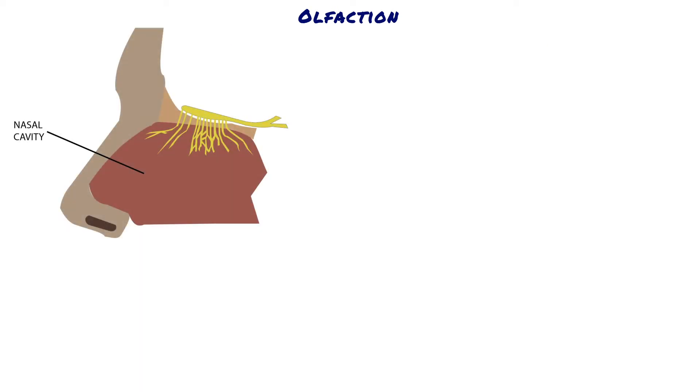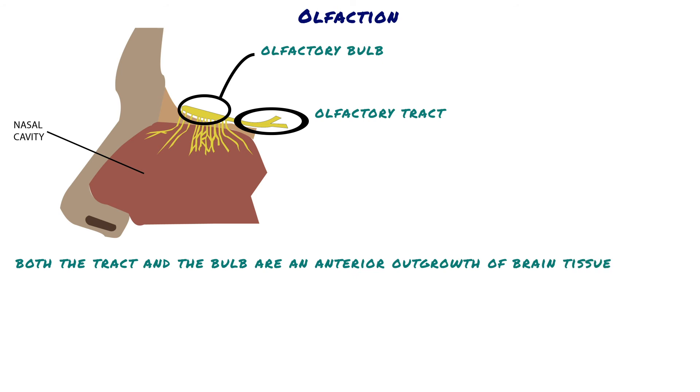The olfactory nerve fibers leading backward from the bulb are called cranial nerve 1, or the olfactory tract. However, in reality, both the tract and the bulb are an anterior outgrowth of brain tissue from the base of the brain.